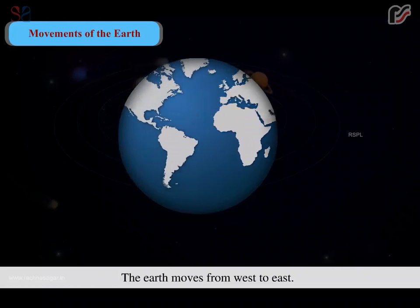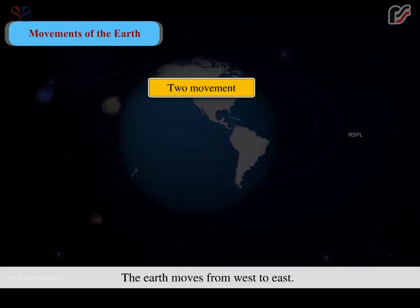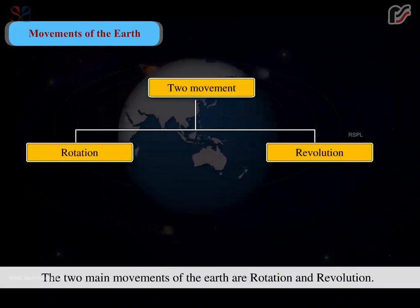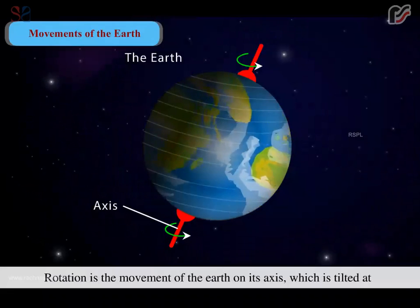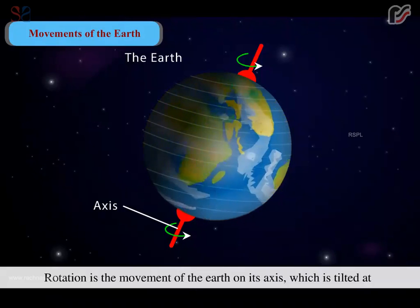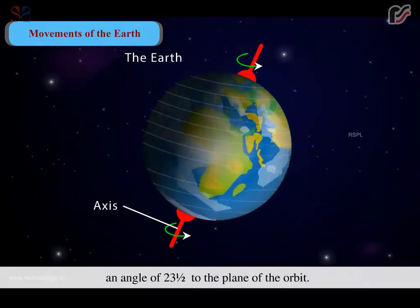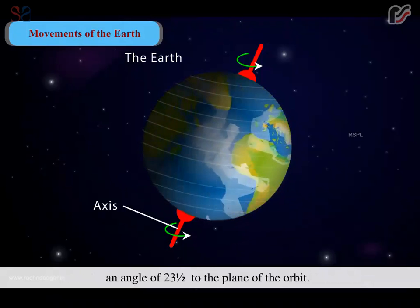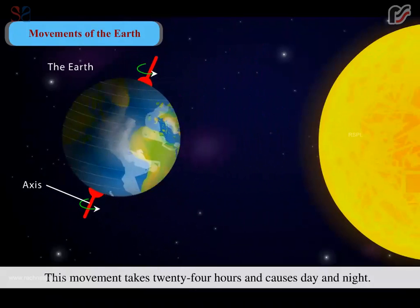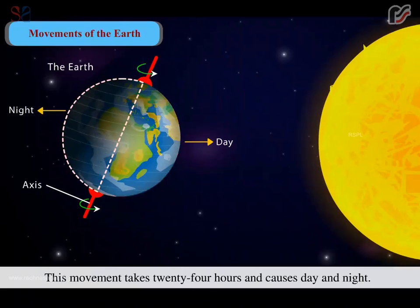The earth moves from west to east. The two main movements of the earth are rotation and revolution. Rotation is the movement of the earth on its axis, which is tilted at an angle of 23.5 degrees to the plane of the orbit. This movement takes 24 hours and causes day and night.